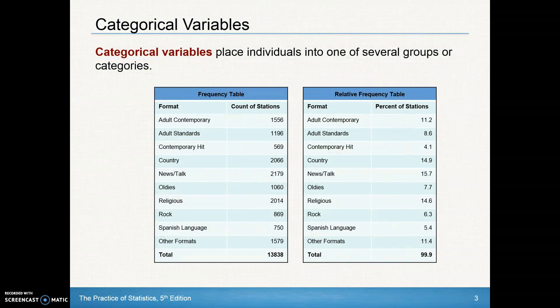Categorical variables place individuals into one of several groups. Remember, groups or categories. We see down here below the same data. We've got a frequency table that lists the counts of each of these different types of formats of radio stations, and this is a relative frequency table that displays percents.